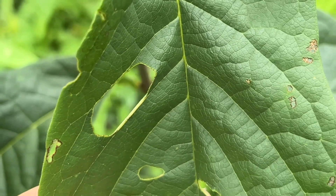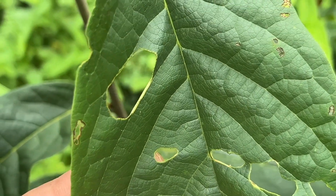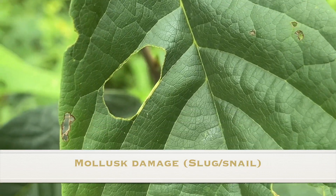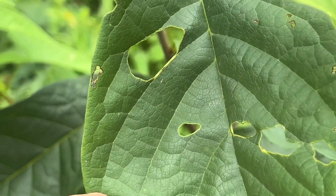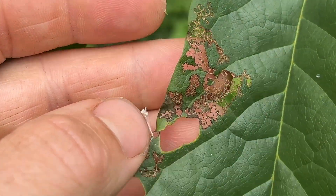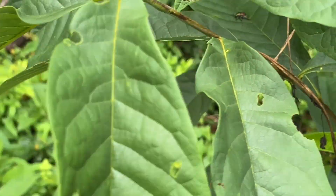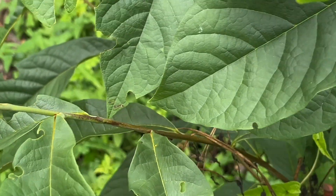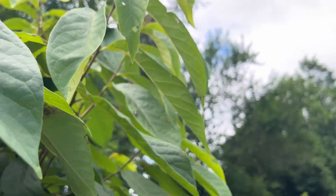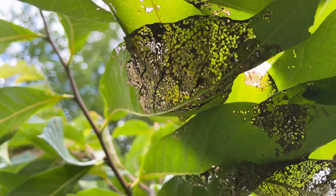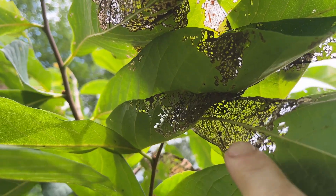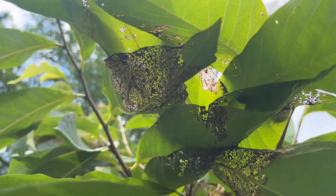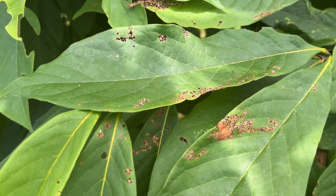Typically when you see odd-shaped holes like this randomly in the middle of the leaf, that is mollusk damage — so that would be slugs or snails, which really enjoy feeding on pawpaws also. That's a telltale sign of a mollusk: that circular hole. Zebra swallowtail butterflies tend to eat an entire leaf or half of a leaf along the edges and margins. This more laced pattern is Japanese beetle damage — you can see the lacing of the leaves they're doing here.